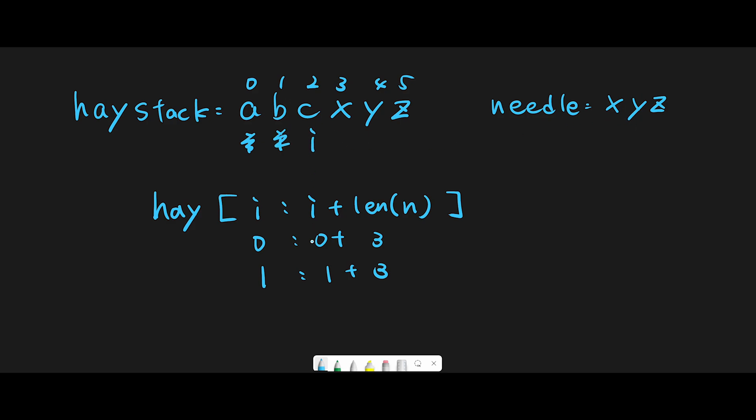Move next. Now current index is 2 and 2 plus 3 is 5, which means 2 to 4. That's 'cxy' and they are not the same, so move next.